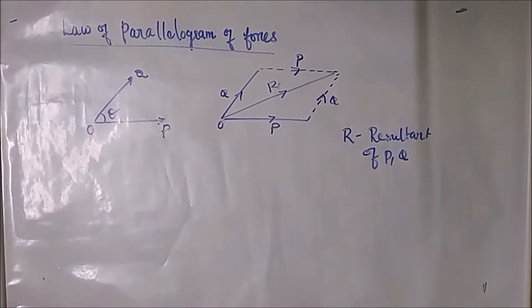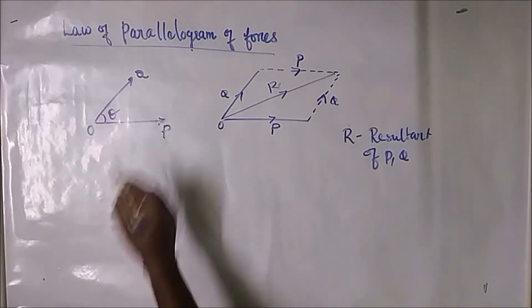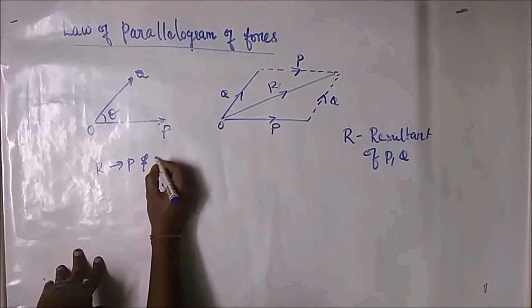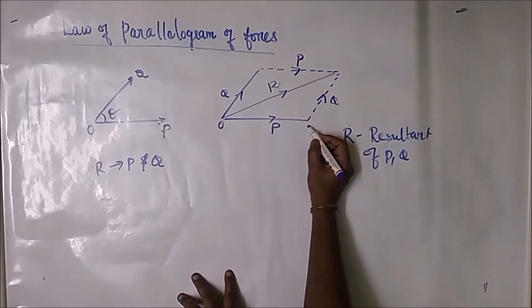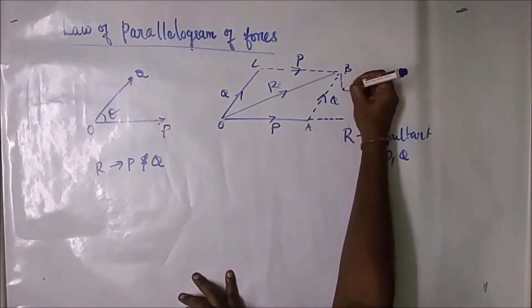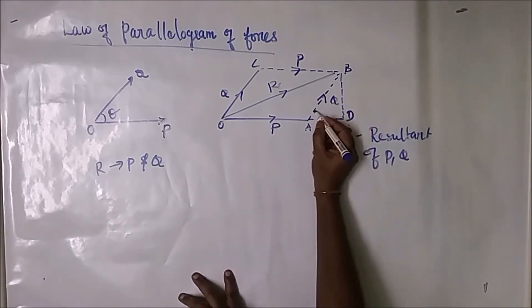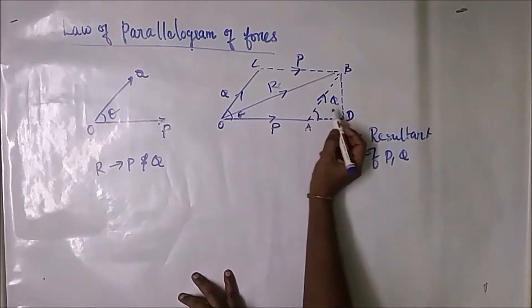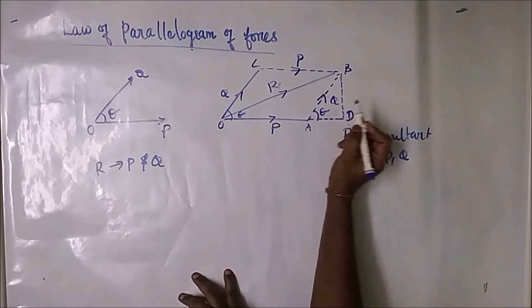The angle between P and Q is theta. Here I have represented the angle theta between P and Q. We have to calculate the formula for R in terms of P and Q, so now I will solve this derivation. Consider this diagram: the points are A, B, and C. The angle between the two forces Q and P is theta, and the angle at B is also termed as theta.